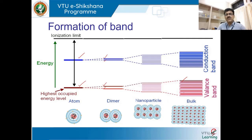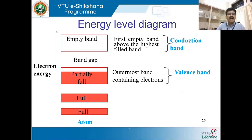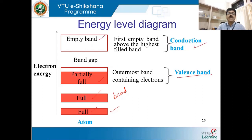We fill electrons from the lowest band upward. If the electrons are totally filled, we call it a full band or bound band. The outermost band where electrons are partially or fully filled is called the valence band. The band above that, which is totally empty, is called the conduction band. All bands above the conduction band are also empty. There is a small gap between the valence band and conduction band called the forbidden energy gap or band gap.